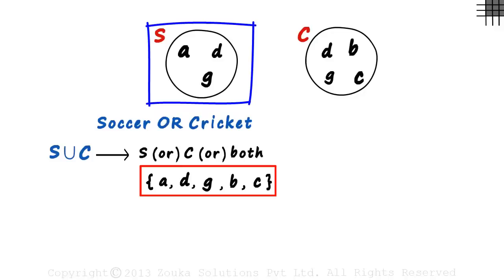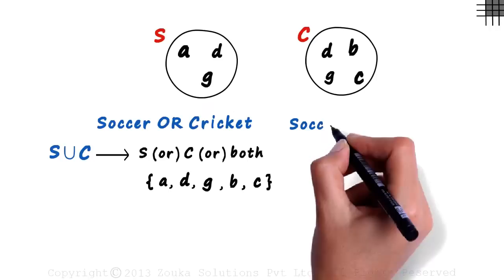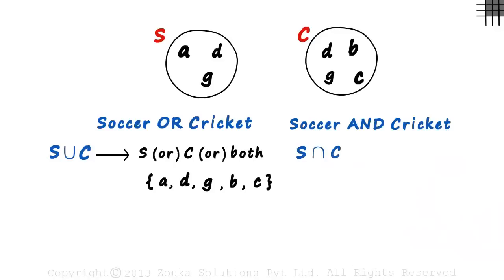And what is the set of people who like soccer and cricket? We have to find S intersection C, which is the set of people who like both soccer and cricket. There are just two such people who like both the sports: D and G. But we have already seen all this before.